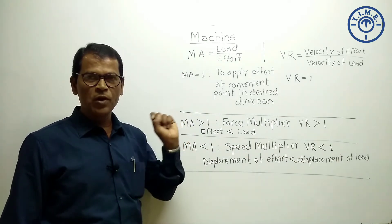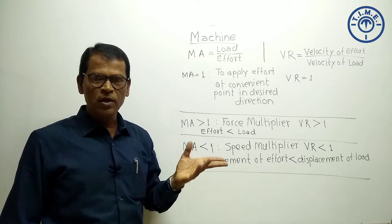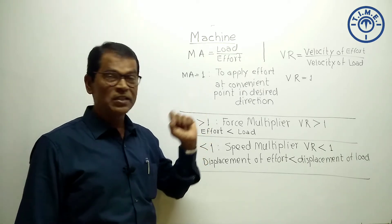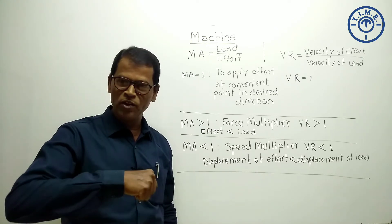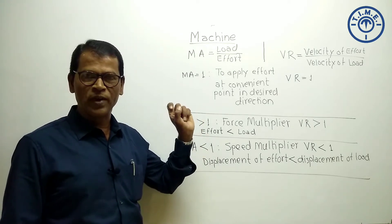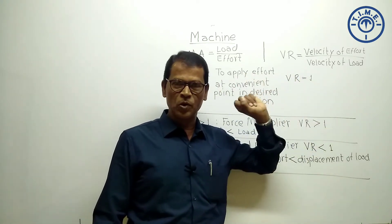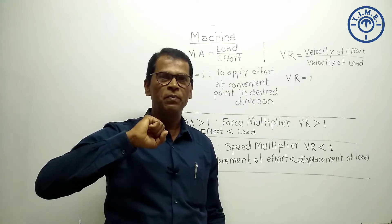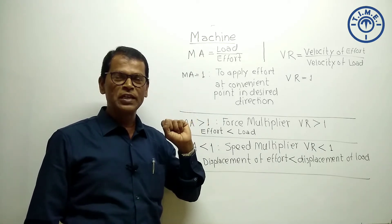When mechanical advantage is equal to 1, it means effort is equal to load. What is the use of the machine then? The use is to apply force in a convenient direction. For example, in a pulley, the weight of the bucket full of water is 500 Newton and you apply the same effort but in a convenient direction. In such a case, mechanical advantage equals 1 and velocity ratio also equals 1 — meaning if you pull the rope 1 metre down, the bucket is lifted 1 metre up. So when mechanical advantage is 1, the machine helps us apply force in the desired direction.